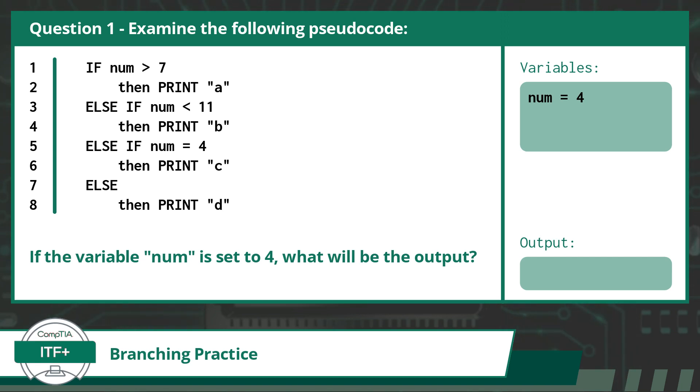Ready, here is question 1. Examine the following pseudocode. If the variable num is set to 4, what will be the output? If you want to try and solve this question on your own, pause this video now. Otherwise, I will go through the code line by line.